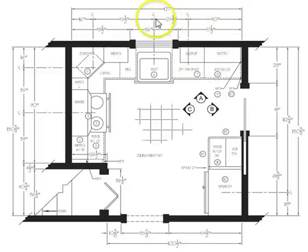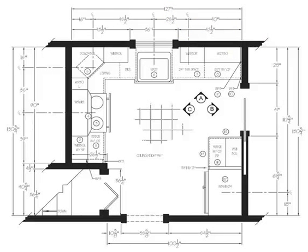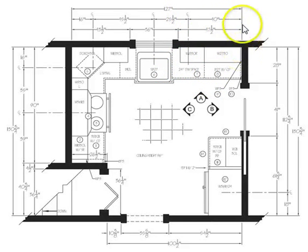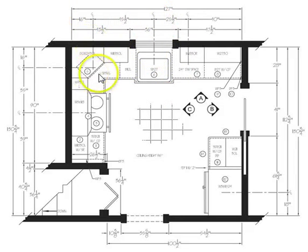As we move closer to the wall, you'll see that the middle dimension string is used for center lines — that's what the 'CL' notation stands for. In kitchen and bath drawings we dimension to the center line of appliances and fixtures, such as the sink, bathtub, shower, and toilet. Here you can see the center line goes to the center of the dishwasher, then to the center of the sink, then to the center of the microwave, and then to the inside face of the wall.